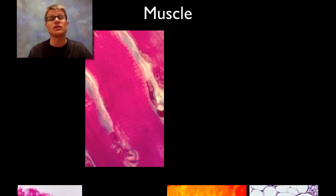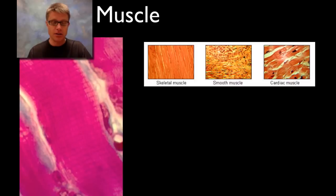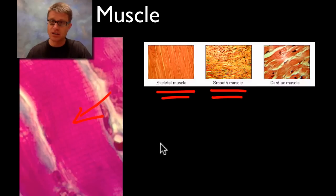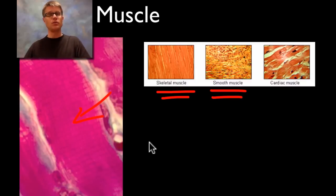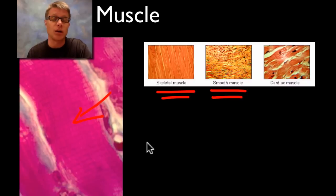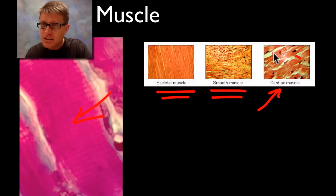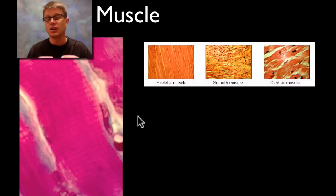Muscle cells are responsible for motion and there are three types. Skeletal muscle cells move your fingers and arms — all movement you are in control of is skeletal muscle. Smooth muscle is involuntary; the movement of food down your esophagus and through your digestive system is smooth muscle — you don't have to think about it, it just moves on its own. The third type, found only in the heart, is cardiac muscle. It looks similar to skeletal muscle but has intercalated discs that transmit electrical signals, which create the contraction of the heart.